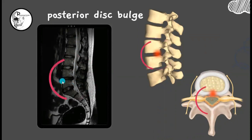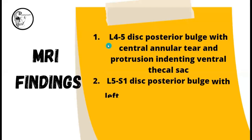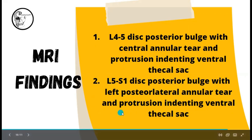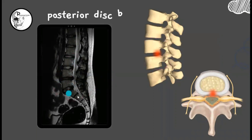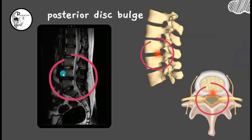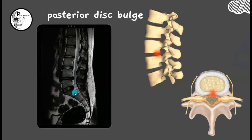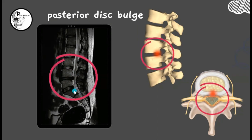The MRI report for the lumbar region reads: L4-L5 disc shows posterior disc bulge with central annular tear and protrusion indenting the ventral thecal sac, and L5-S1 disc shows posterior bulge with left posterolateral annular tear and protrusion indenting the ventral thecal sac. Looking back at the MRI, at the L4-L5 level you can find posterior disc protrusion indenting the ventral thecal sac and causing a small stenosis of the spinal canal. These are the key findings to consider when observing an MRI to arrive at the diagnosis. This concludes today's session. Thank you.